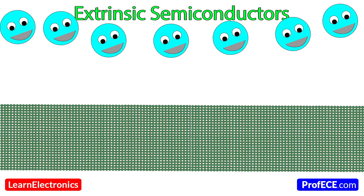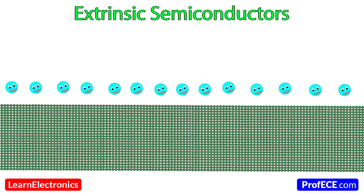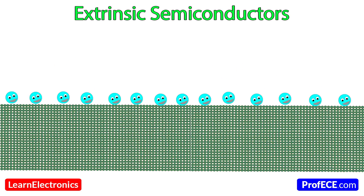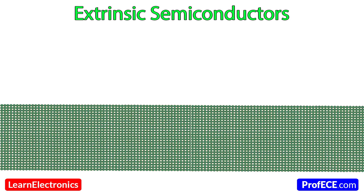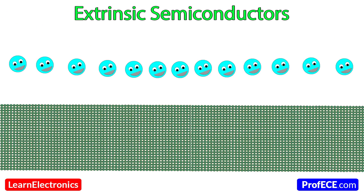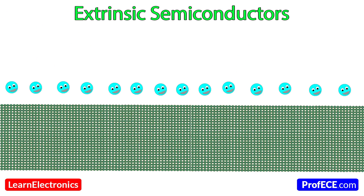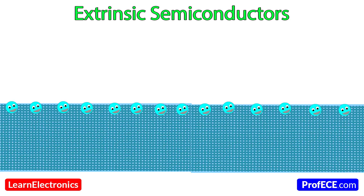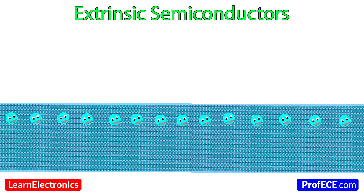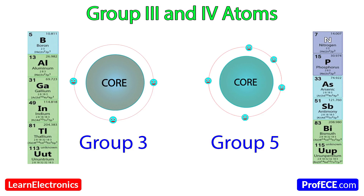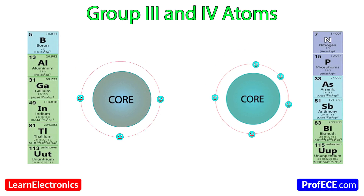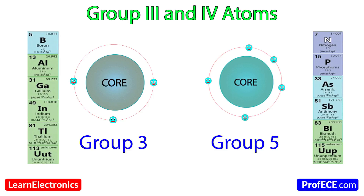Let's refocus on this semiconductor itself. While adding impurities to this pure semiconductor, it will become an Extrinsic Semiconductor, which has better conduction than the earlier one. To be precise, only Group 3 and Group 5 atoms are used for doping in standard semiconductors.